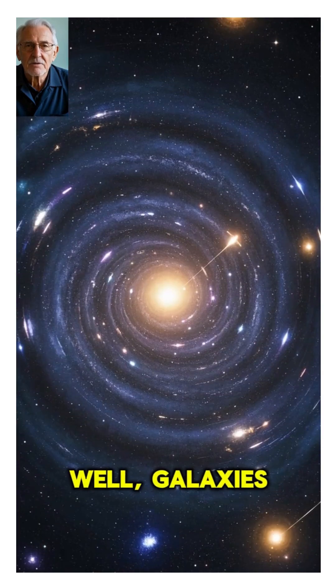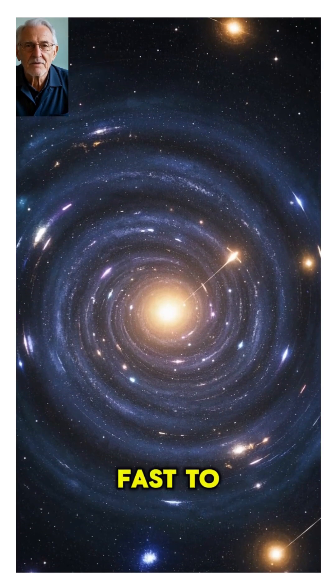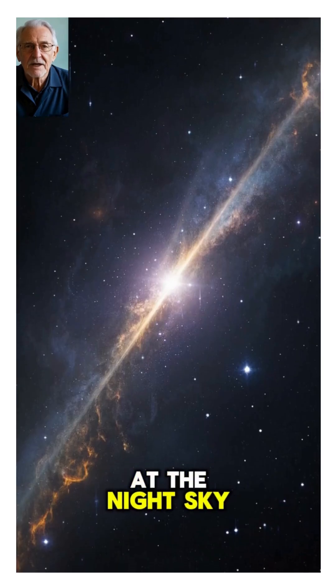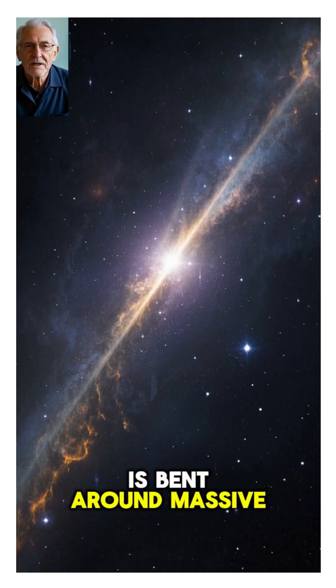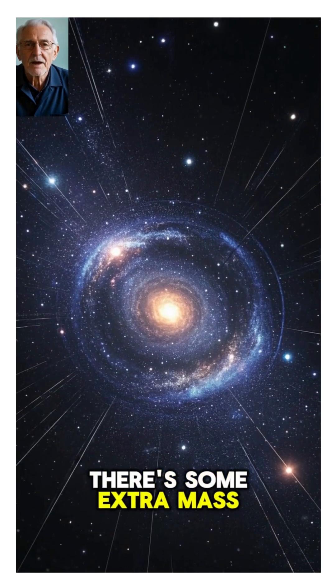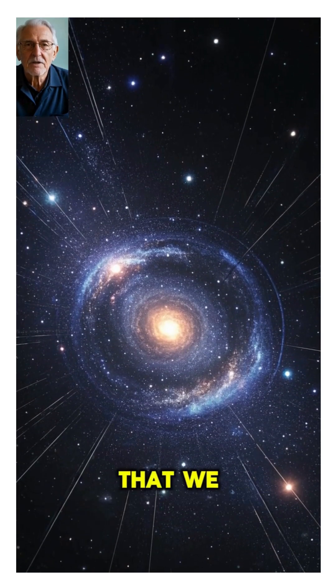How do we know this? Well, galaxies rotate too fast to be complete with just visible matter. And when we look at the night sky, we see that light is bent around massive objects more than it should be. And that means that there's some extra mass in these galaxy clusters that we can't see.